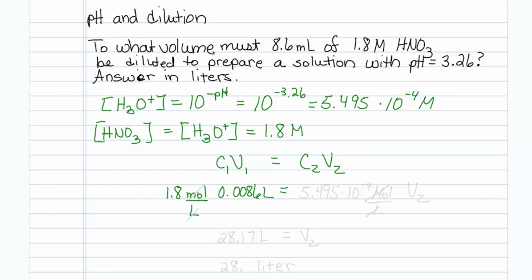My target concentration C2 is 5.495 times 10 to the minus 4 molar, which is moles per liter. V2 should come out in liters when I solve this on my calculator.